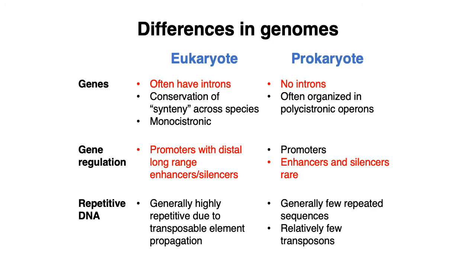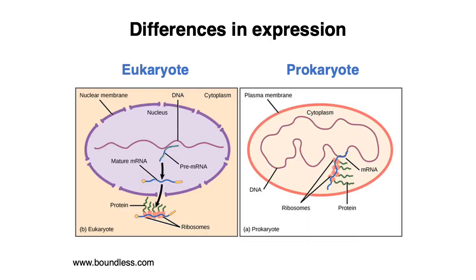In prokaryotic genomes, most gene regulation happens in the promoter region. In eukaryotic genomes, there's quite a bit of repetitive DNA sequence — roughly half of the human genome is thought to have some kind of repetitive origin — whereas this is generally not the case in prokaryotic genomes. Additionally, in eukaryotes, transcription happens mostly within the nucleus while translation happens outside in the cytoplasm, whereas prokaryotic cells have no separate nuclear membrane or compartment.